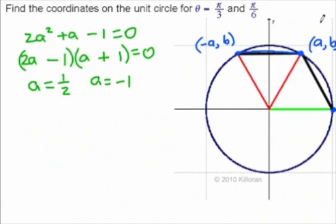Now since a is over here, it's in the first quadrant, it can't be negative one, so we're going to remove that answer and we're going to get just a is equal to one half.